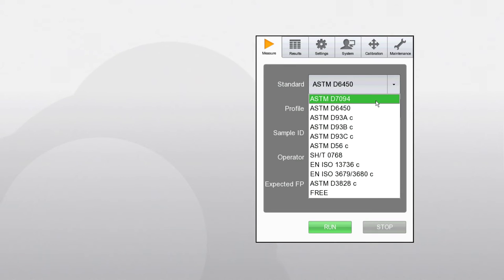Additionally, the analyzer offers several pre-programmed correlation methods to provide results in excellent correlation with the traditional closed cup methods such as ASTM D56 Tag and ASTM D93 Pensky-Martens, as well as with flash/no-flash methods.